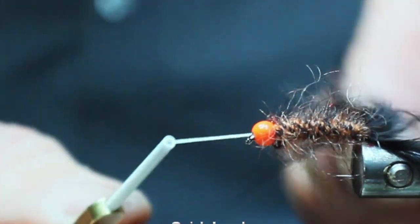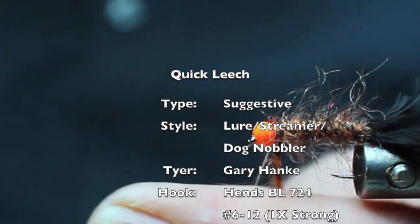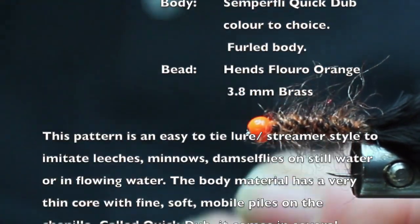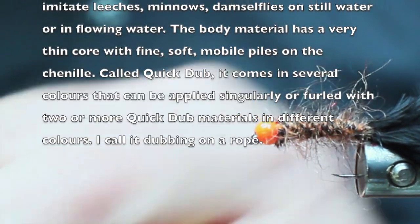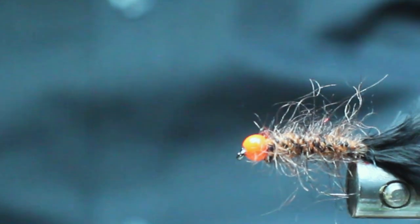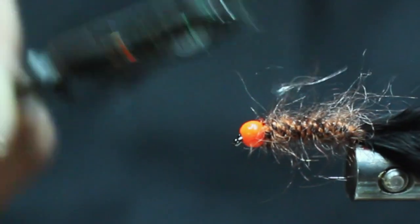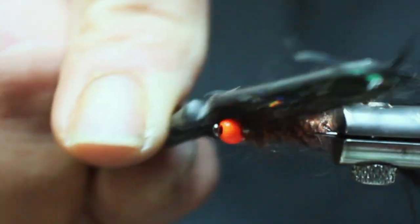And the fly pattern is complete, short of brushing it out some more. So, like I mentioned, I call this the Quick Dub from Zemperfly, Dubbing on a Rope. Like I said, it's a very fine core material, very fine hair, so it gives it a lot of flow. And then by brushing it out, you can create a very nice, small leech profile.